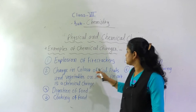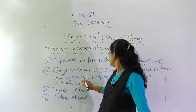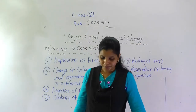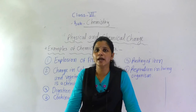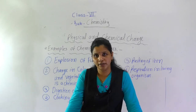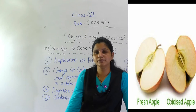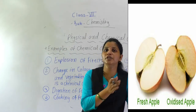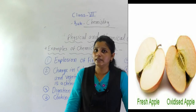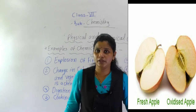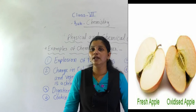The second example is change in the color of cut fruits and vegetables on keeping in air. This is a chemical change. You mostly observe this — if you cut an apple and keep it in the air, after some time the color of that apple changes to brown. Why is this happening? What is the reason? Apple contains malic acid.